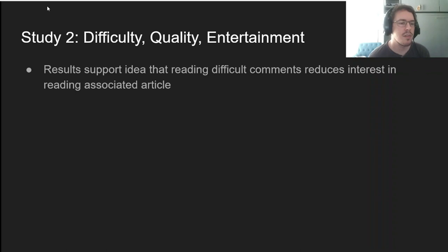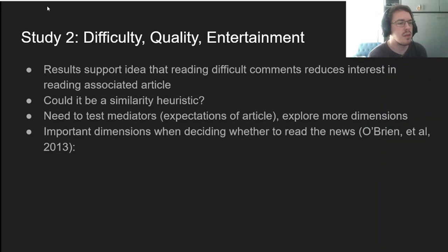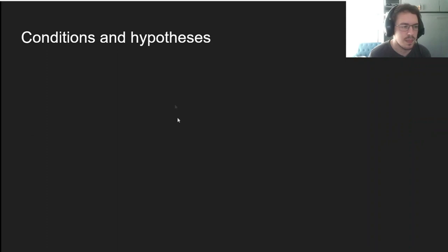Overall, our results support the idea that reading difficult comments can reduce people's interest in reading the associated article. So could there be a similarity heuristic at play here? To test that, we need to collect more data on participants' expectations of the articles themselves, as well as explore more comment dimensions to test how general such a heuristic might be. To do that, we used a few important dimensions people used when deciding to read the news: difficulty, information quality, and entertainment value.